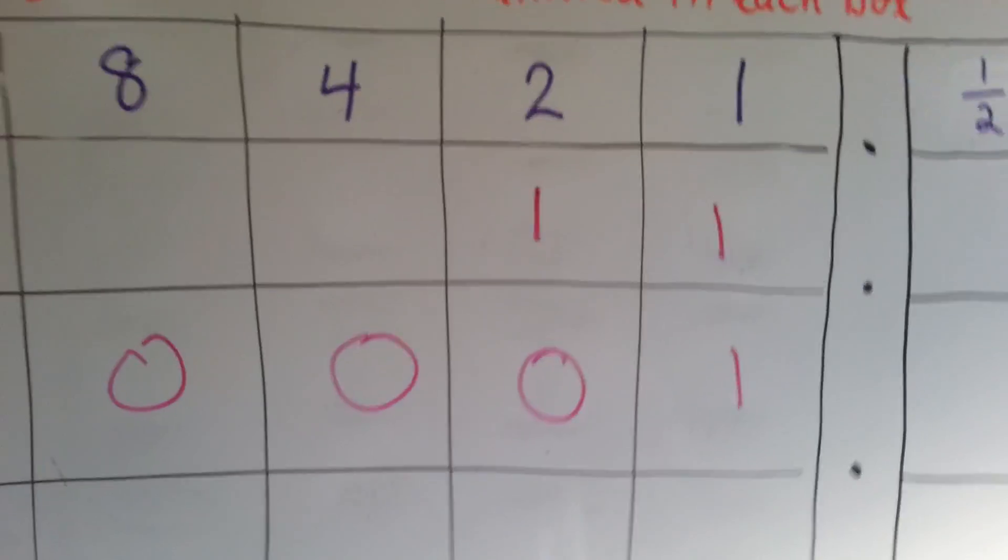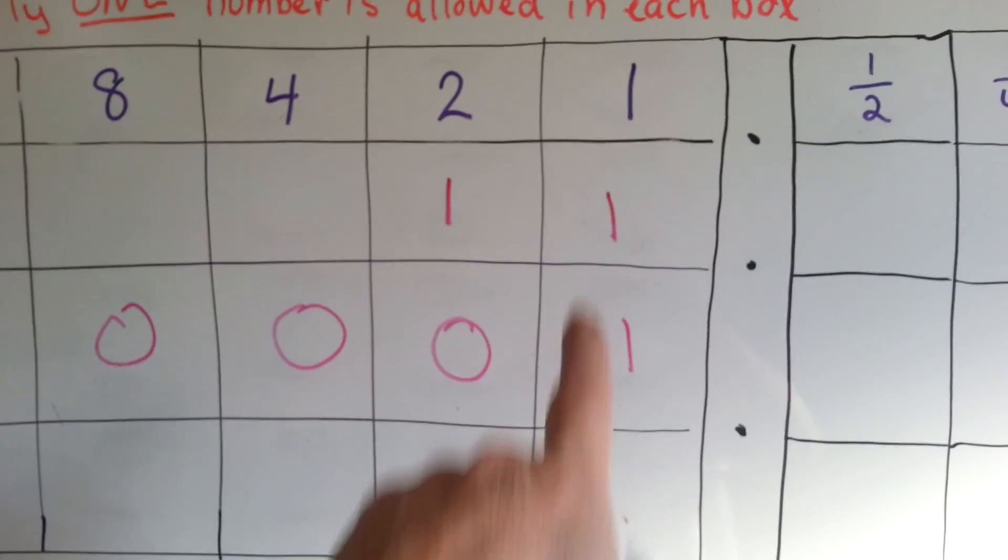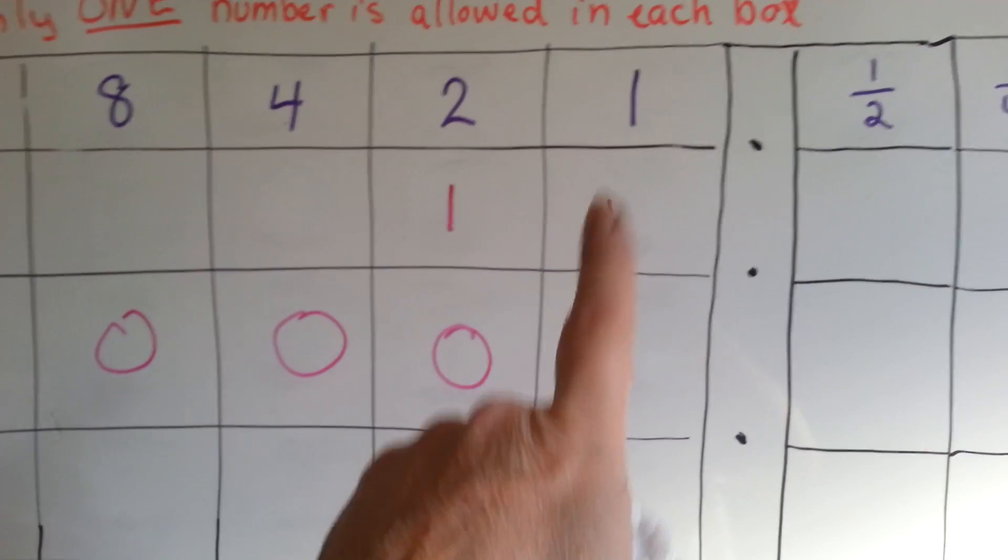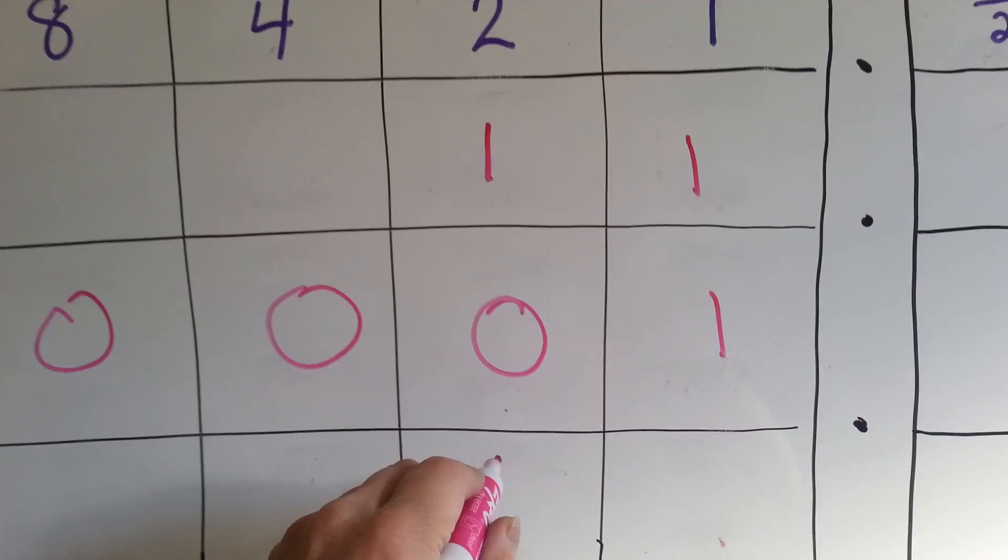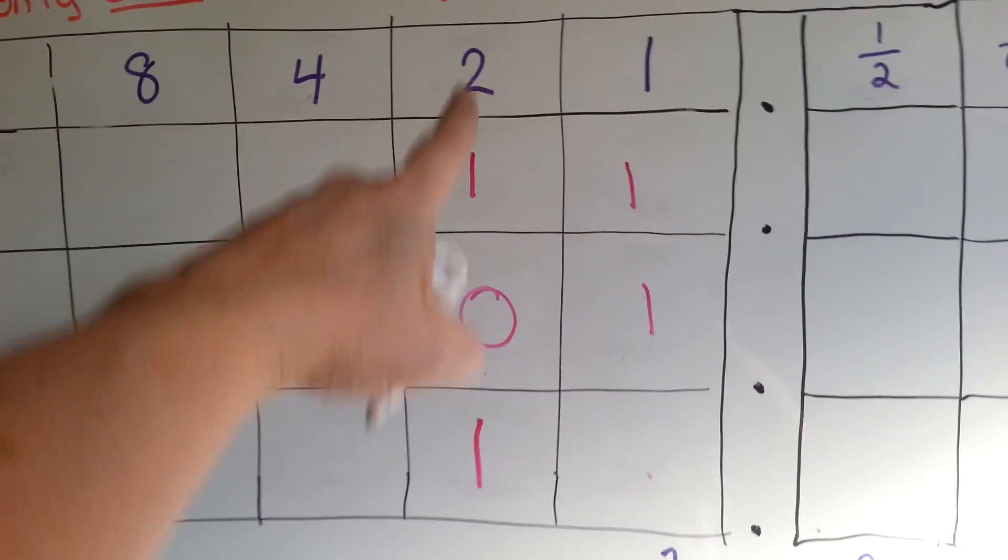In base 2, you can't have a 2 in this column. The biggest number you can have is a 1. The minute you get to 2, you go in here, and you're putting a 1 there because you have a 2.